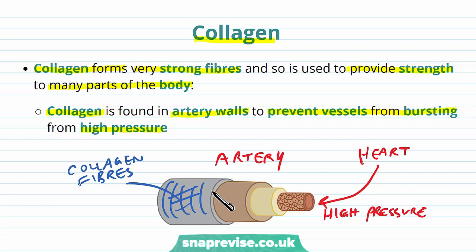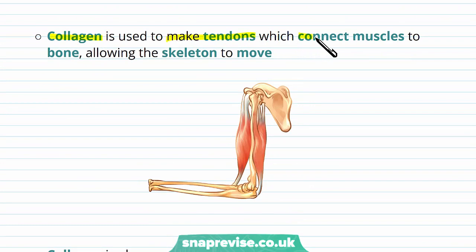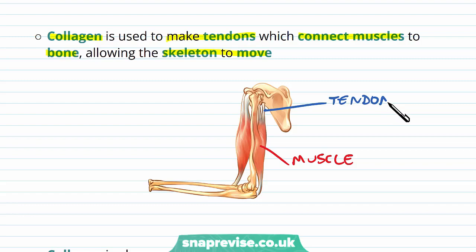Collagen is also found in tendons, which connect muscles to bones allowing the skeleton to move. Here we have a diagram of the upper arm with the tricep muscle. To connect to the bone, a very strong fibrous element is needed — the tendon. When the muscle contracts it pulls on the tendon, moving the bone at the joint. The tendon must be tough enough to withstand that strong pull and remain attached to both muscle and bone.